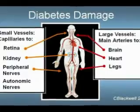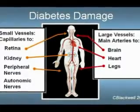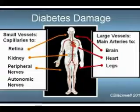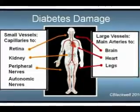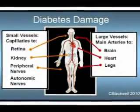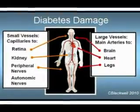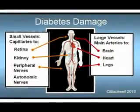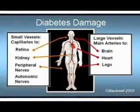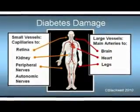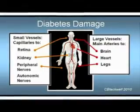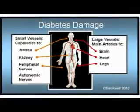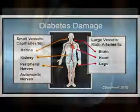To review: in diabetes, elevated blood sugar and other pathologic processes cause damage to both small and large blood vessels throughout the body. In the next video, we will look at the relation between blood sugar control and specific complications. The message is that the effort you spend in controlling blood sugar, blood pressure, and lipids makes a big difference in your long-term health.